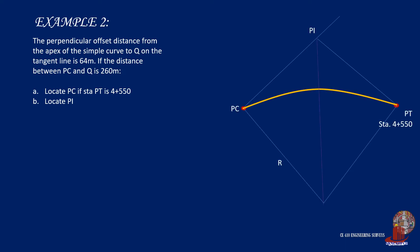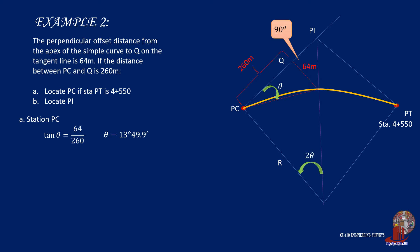The second example shows locating a station from PT. It states: the perpendicular offset distance from the apex of the simple curve to point Q on the tangent line is 64 meters. If the distance between PC and Q is 260 meters, locate PC if station PT is 4 plus 550, and also locate PI. From the triangle generated by the tangent and perpendicular offset, theta is found trigonometrically as tangent of theta equals 64 over 260, giving theta equal to 13 degrees 49.9 minutes. The angle theta in the small triangle is actually part of the central angle delta and equals half of it — use trigonometry to prove this on your own.